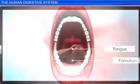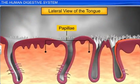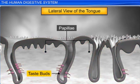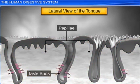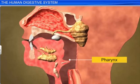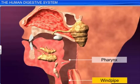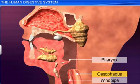The upper surface of the tongue is covered with papillae — small projections arranged in a row, some of which have taste buds. The tongue helps push food from the oral cavity into the pharynx, a passageway for air and food. The pharynx opens into the windpipe or trachea, and esophagus, a narrow tubular muscular organ.